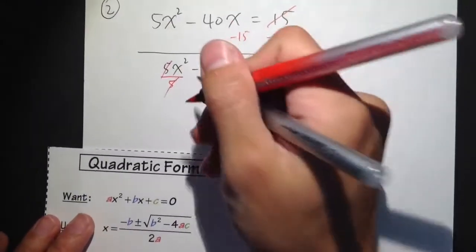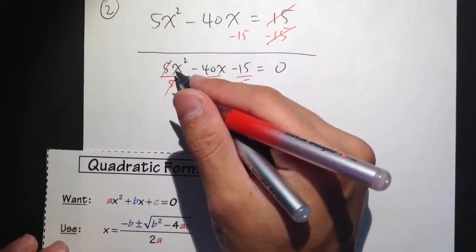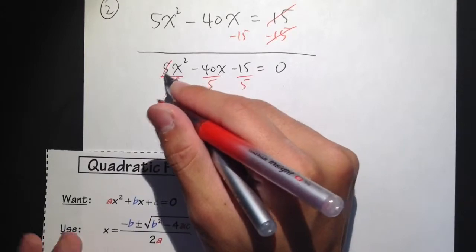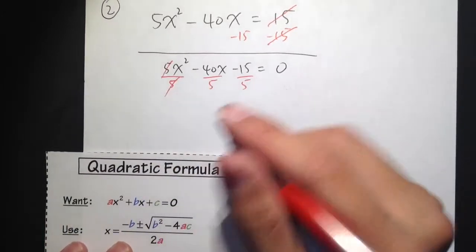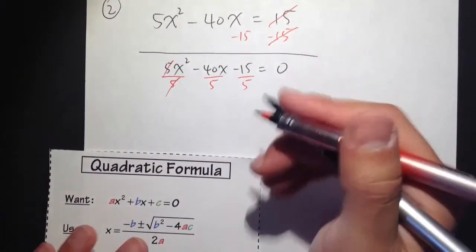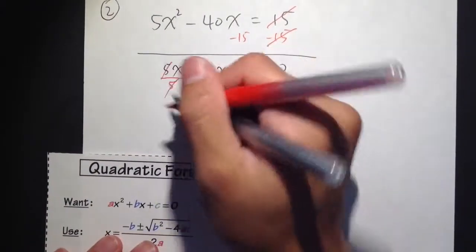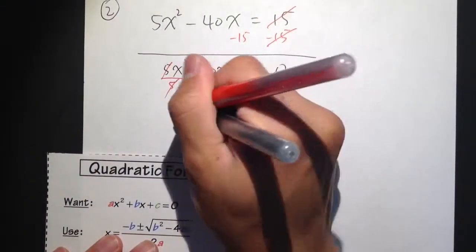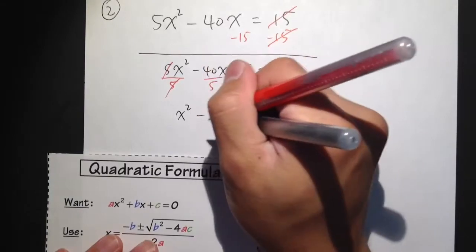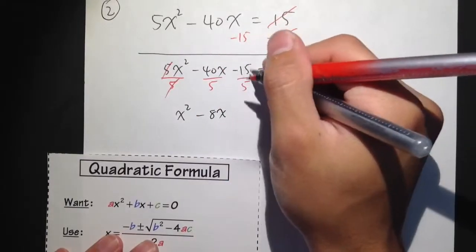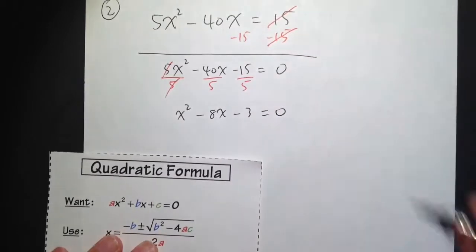Let's divide by 5 on all these three terms. So they cancel. And in this case, I'm not trying to purposely make the x² by itself. I'm just trying to reduce so that we can work with smaller numbers. That's why I choose to divide by 5. I get x² - 8x - 3 = 0.